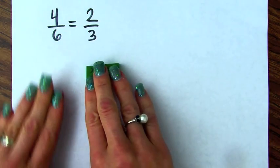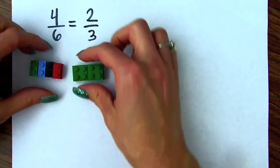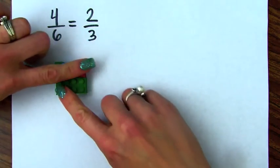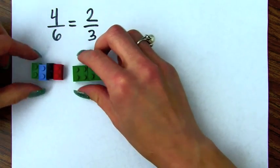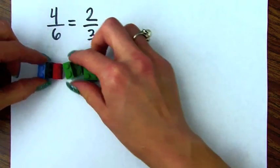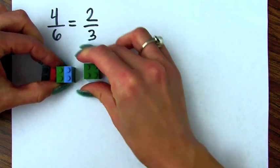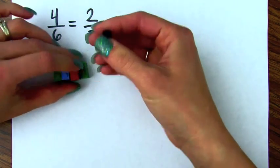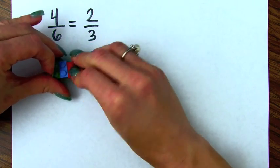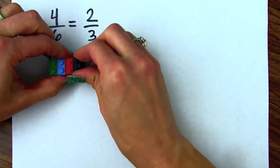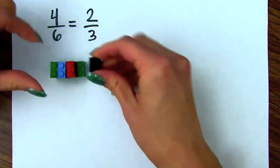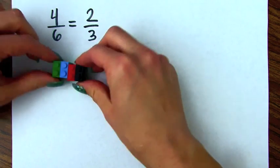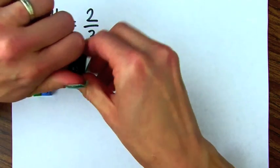We want to show that four-sixths is equivalent to two-thirds. You can just set them side by side like this, or you can even do what kids would do — if they were building with Legos, they would stack them. That's why I think Legos are an excellent manipulative to show fractions conceptually. When you're building with Legos, you're always thinking about how many Legos you need, so it makes a lot of sense to use Legos to represent fractions.